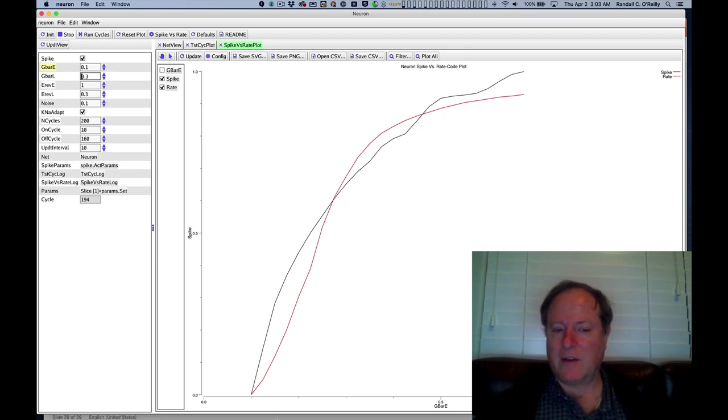And then also our noisy x over x plus one equation. And they're different in detail, but they both exhibit this kind of saturation, this sharp rise. And it's a reasonable overall fit. The red is the rate code and the black is the empirically computed spiking rate.